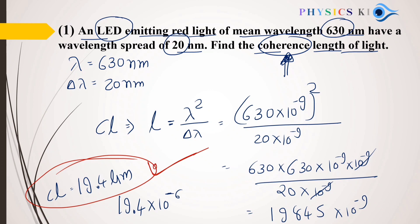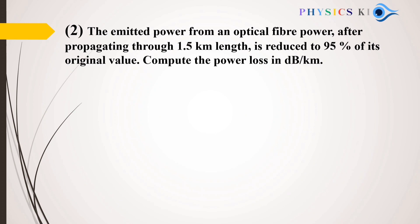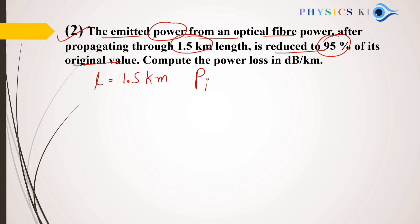Our second numerical: the emitted power from an optical fiber after propagating through 1.5 kilometers is reduced to 95% of its original value. So suppose original input power Pi is 100, then output power Po is 95. Find the power loss in dB per kilometer.